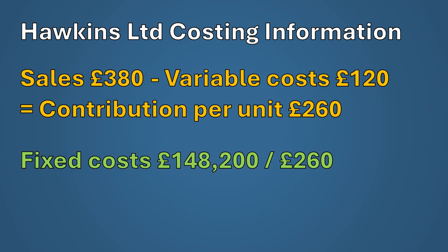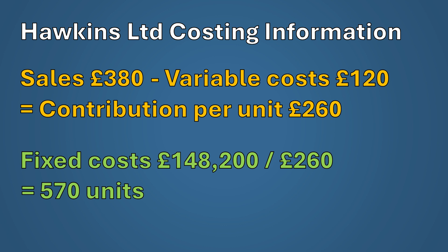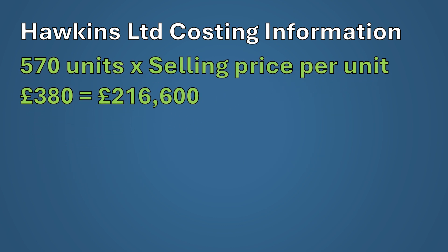Take the fixed costs of £148,200 and divide by the contribution per unit of £260. This gives a breakeven of 570 units, meaning the business would have to produce and sell 570 units to cover the fixed costs. To convert this into breakeven in revenue, multiply the breakeven in units of 570 by the selling price of £380, giving a breakeven revenue of £216,600.